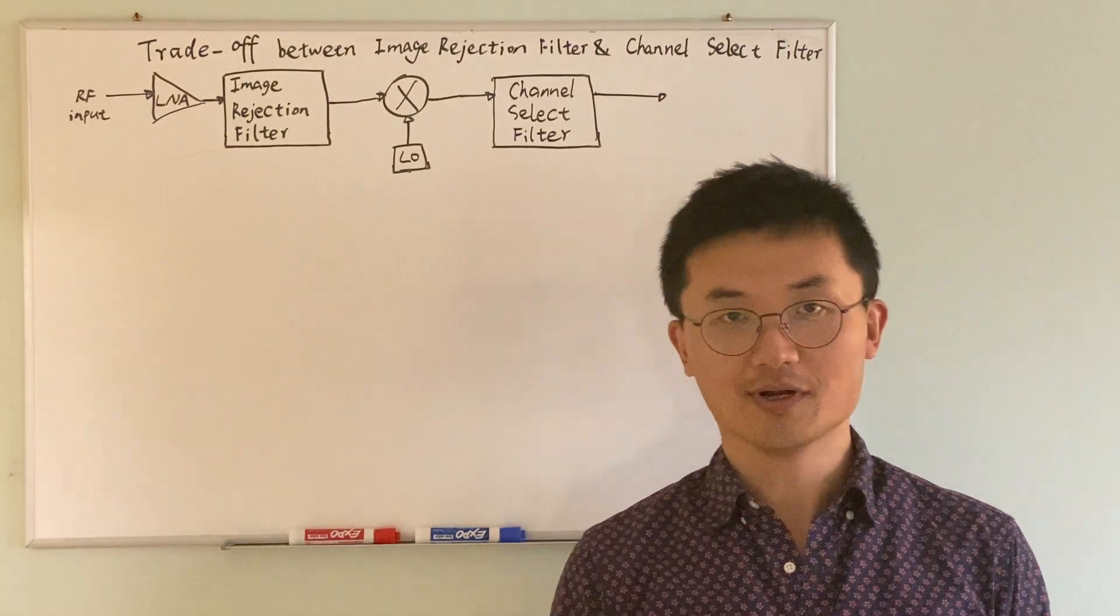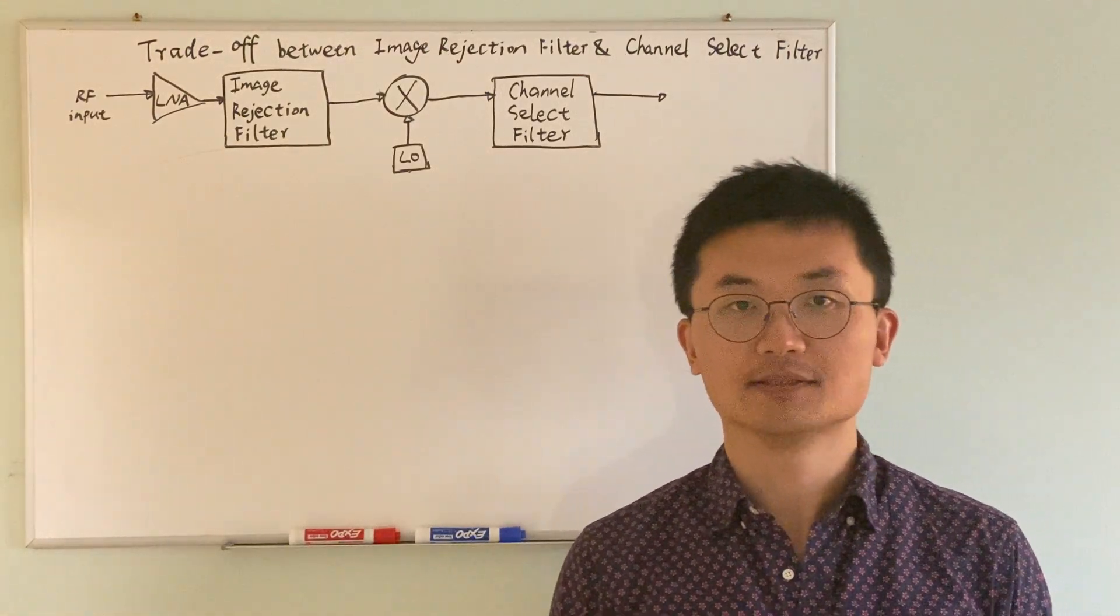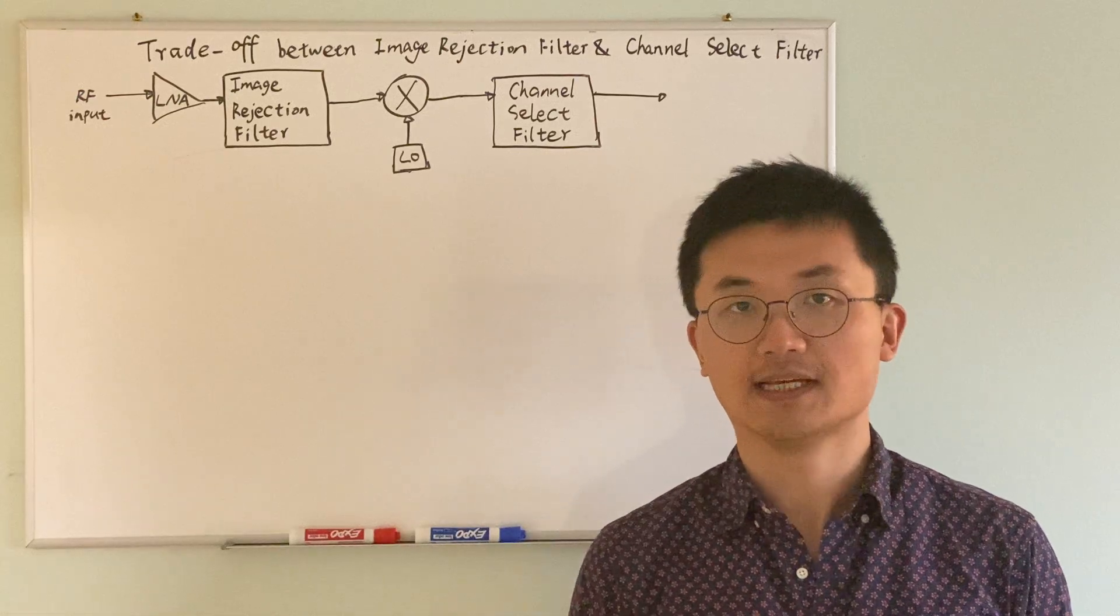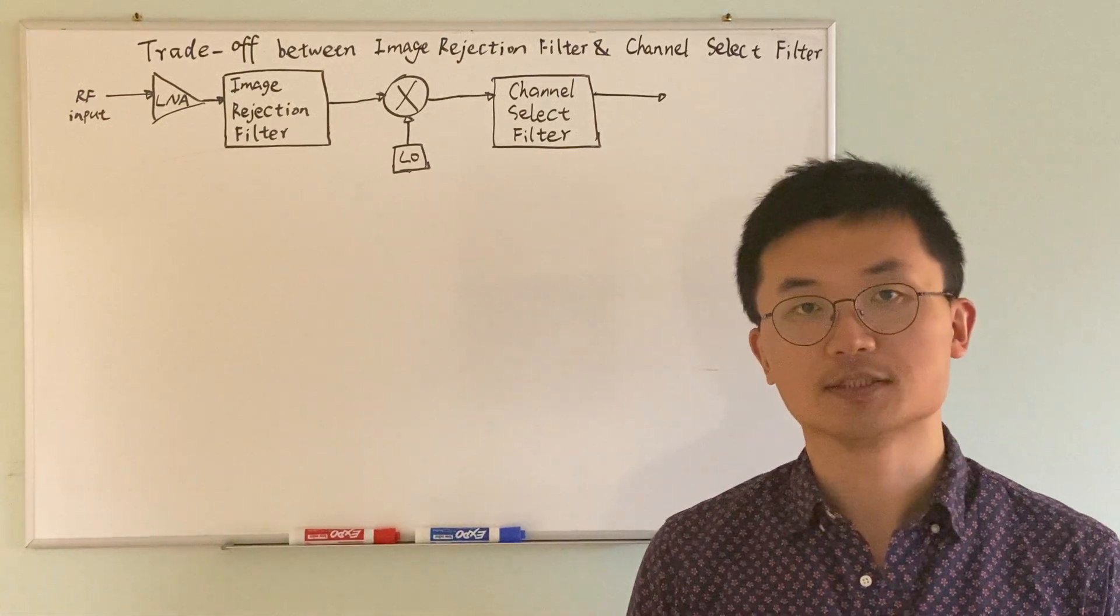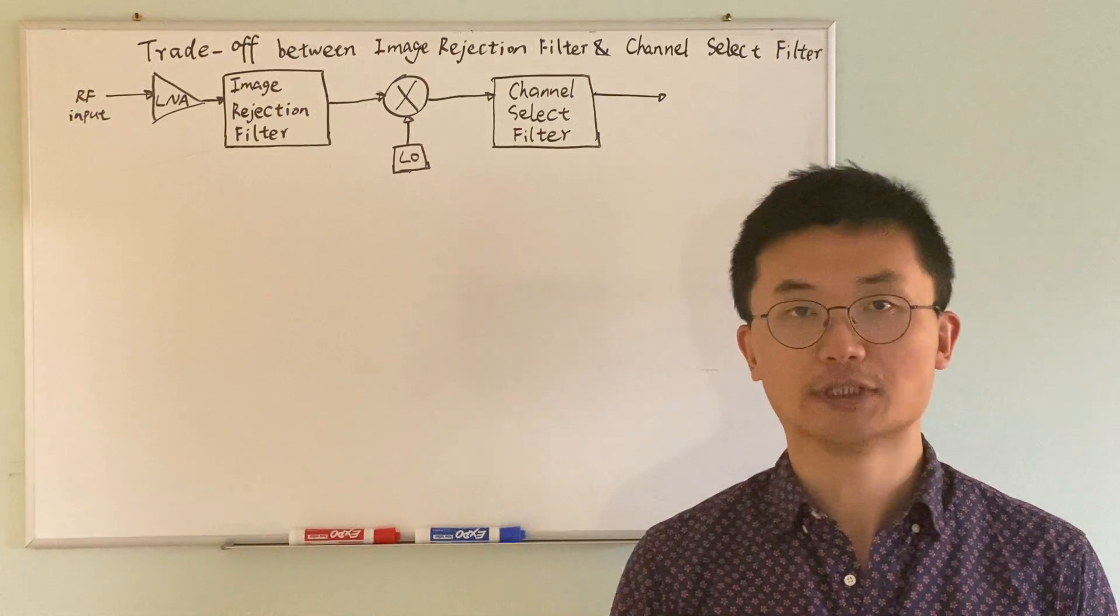Hello everyone, welcome back to my channel. Today I'm going to talk about a pair of trade-offs in the receiver architecture. It is the trade-off between the channel select filter and the image rejection filter.